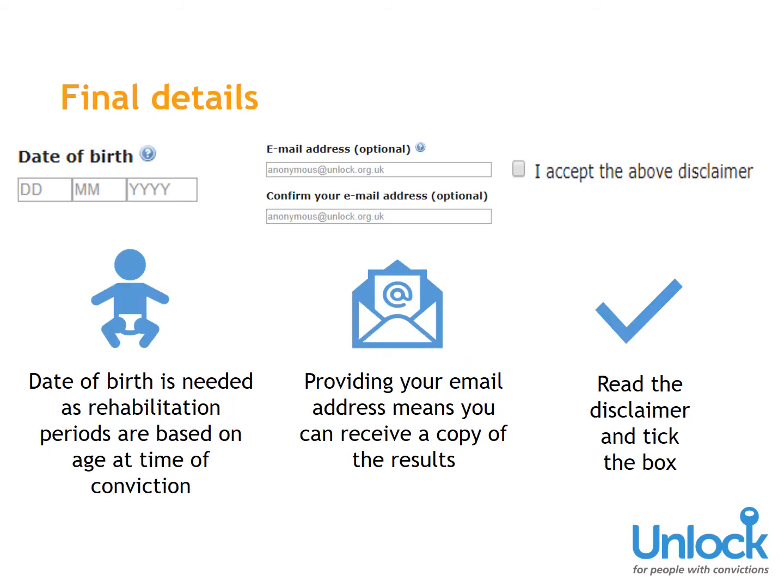Final Details: Your date of birth is needed to determine how old you were at the point of conviction, as some rehabilitation periods are based on the age you were at the time. If you want to keep a copy of the results, you will need to provide your email address — the email subject line will be 'Disclosure Calculator Results' and will contain the details you input. Make sure you read the disclaimer and, if you're happy, tick the 'I accept the above disclaimer' box, followed by 'Calculate the Result'.